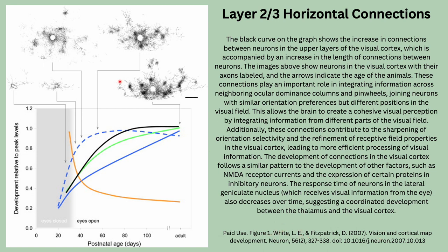Leonard White's study also shows that from birth upward to adulthood you grow connections from layer 2/3 of visual cortex. If one line orientation pinwheel responds to a particular pixel, it connects with other pixels responsive to that same orientation — for example, all neurons looking for a vertical line connecting with neighboring neurons doing the same. These horizontal connections between pinwheels are pretty fascinating.